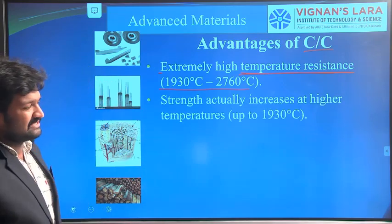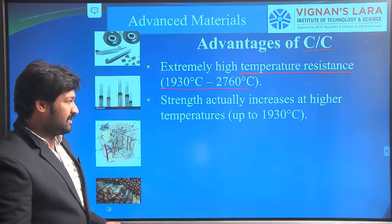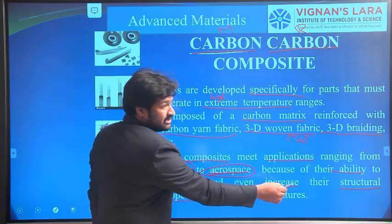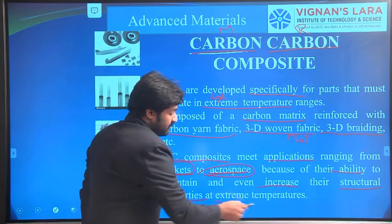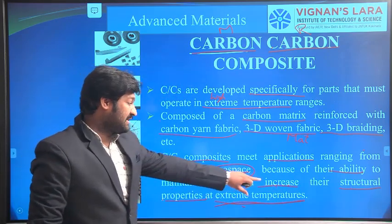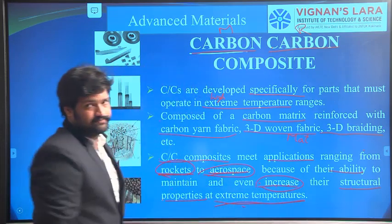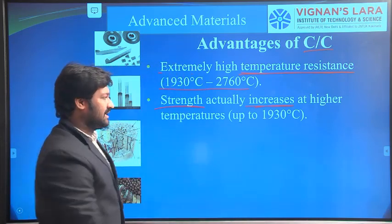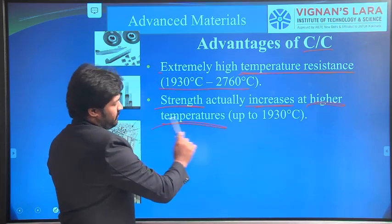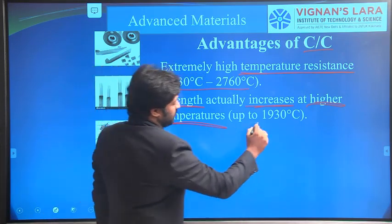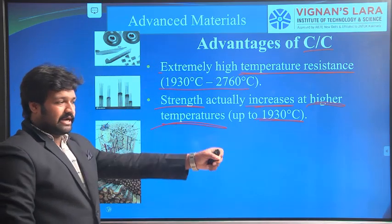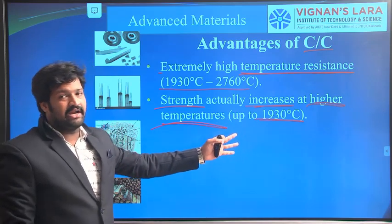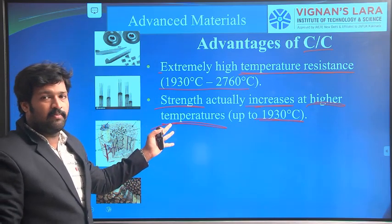Another advantage is their ability to maintain and even increase their structural properties at extreme temperatures. At higher temperatures the strength of the composite actually increases. These higher temperatures can be up to 1900 degrees centigrade, and at those operating conditions, Carbon-Carbon Composites exhibit better properties.